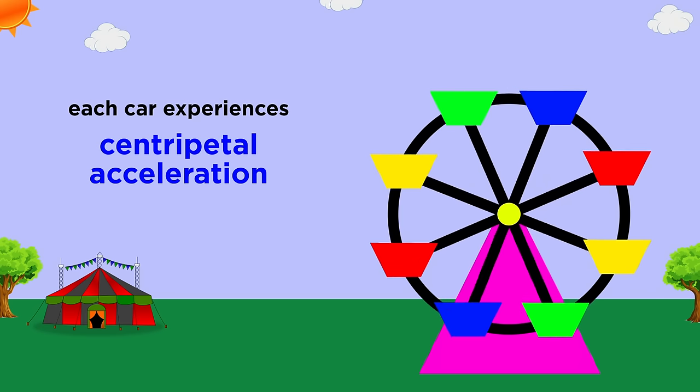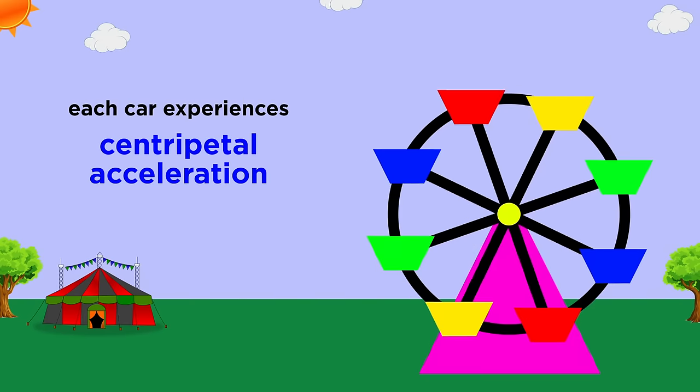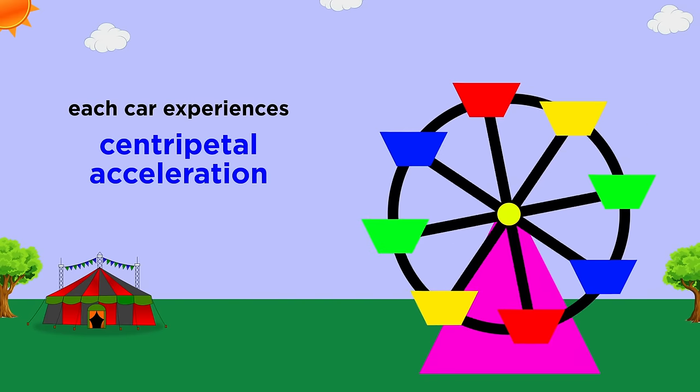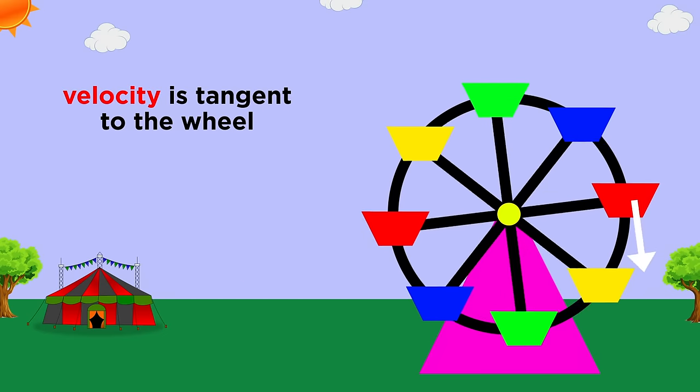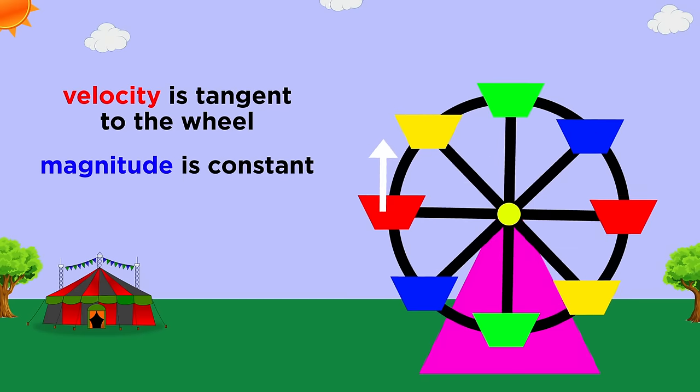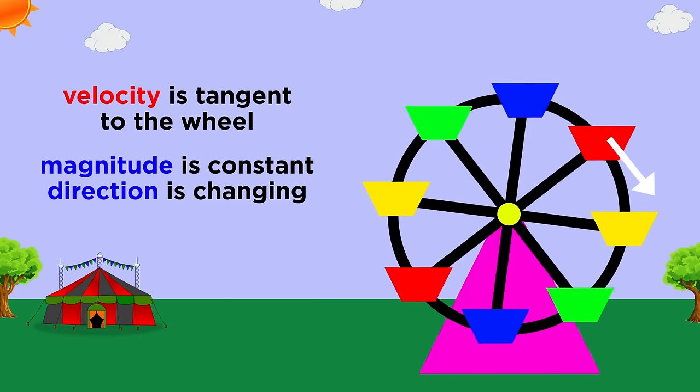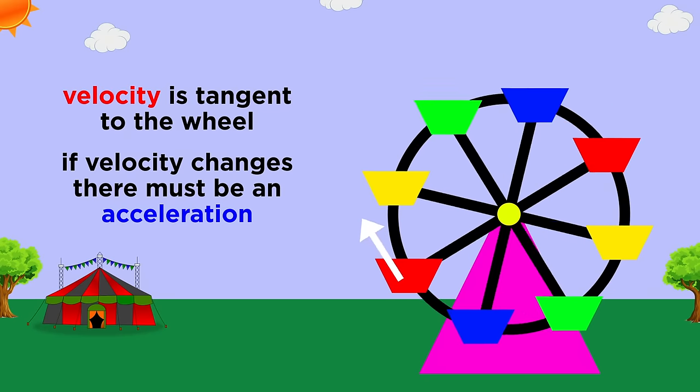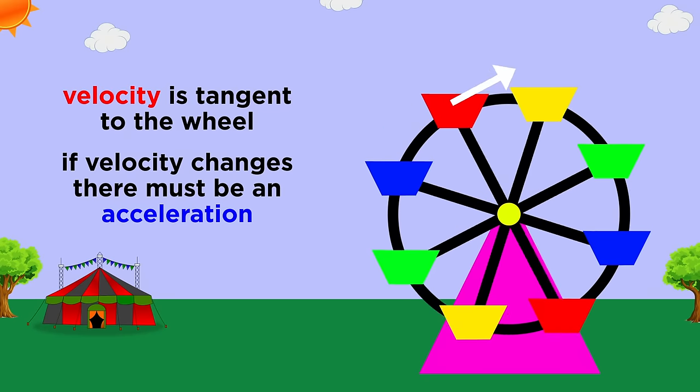The uniform circular motion of the car happens because of a constant centripetal acceleration towards the center of the wheel. At any given moment, the car has a velocity vector that is tangent to the wheel, and while the magnitude of this velocity will not change, the direction is constantly changing, and any such change in velocity can only happen due to some acceleration.